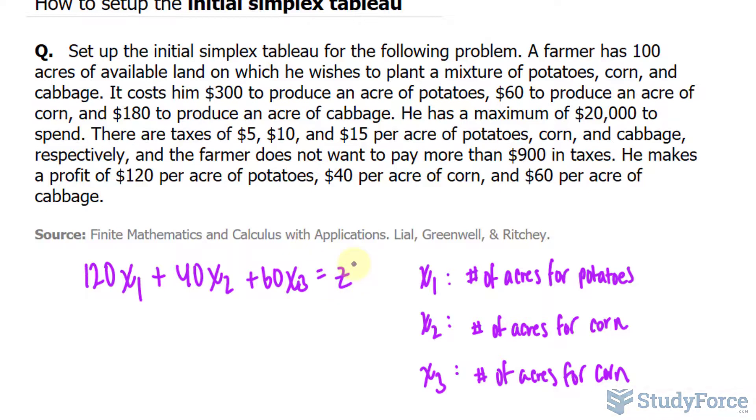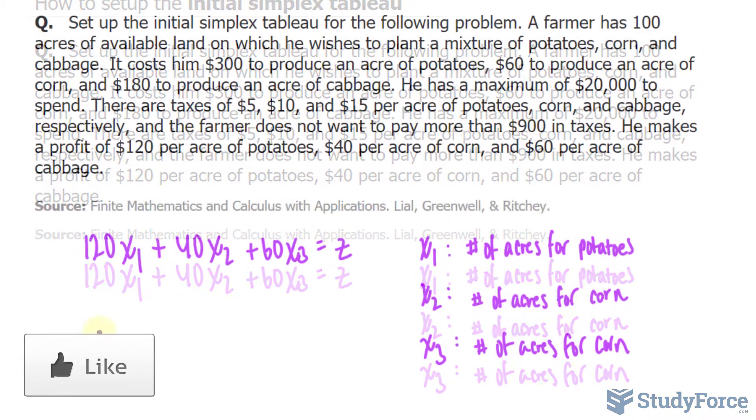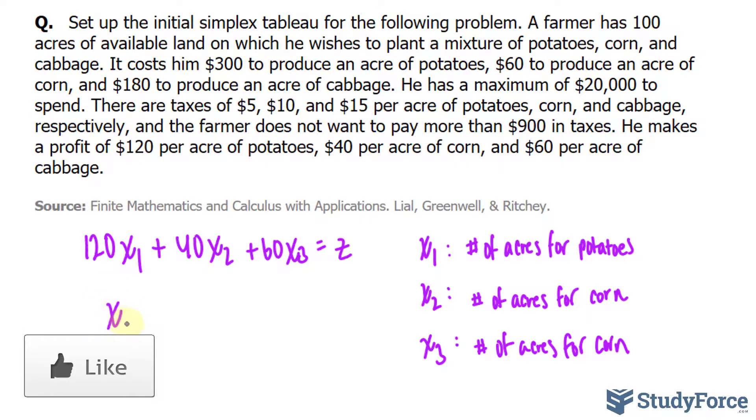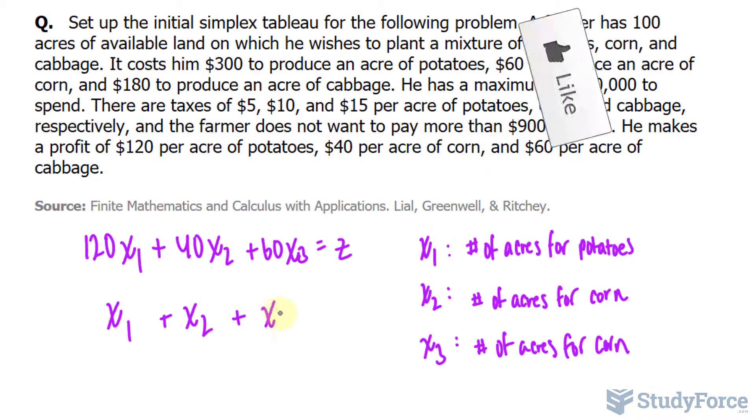Early on in the question, we're told that the farmer has 100 acres available of land, in which he wishes to plant a mixture of these vegetables. So I can write down that x sub 1, plus x sub 2, plus x sub 3, cannot exceed 100 acres. Notice that 100 is greater or equal to everything on the left side. This serves as one of our constraints.